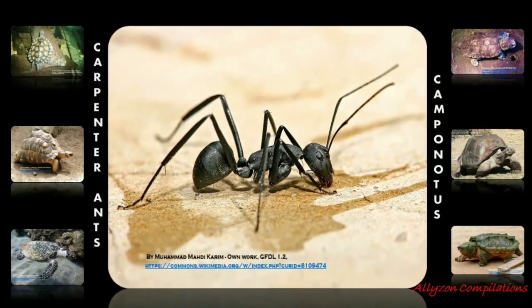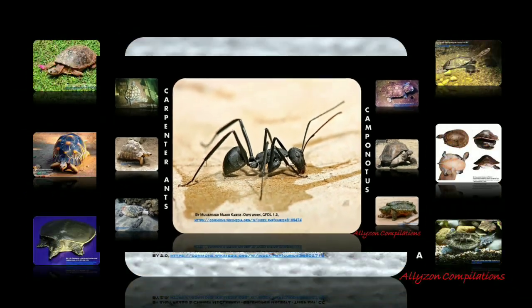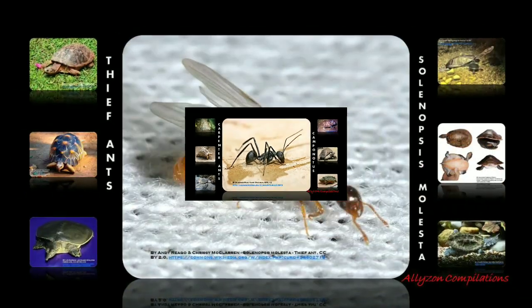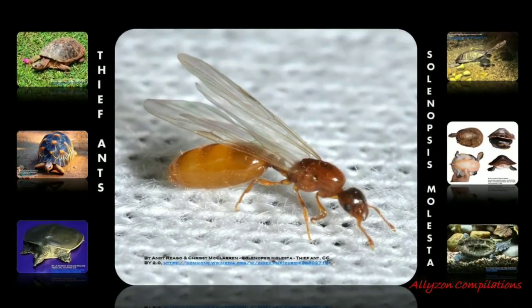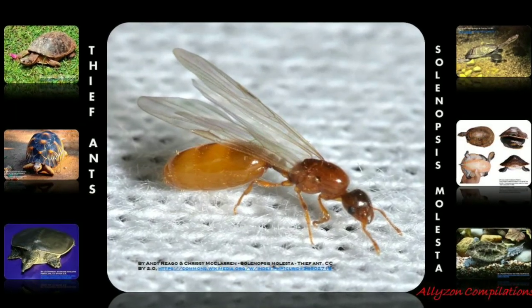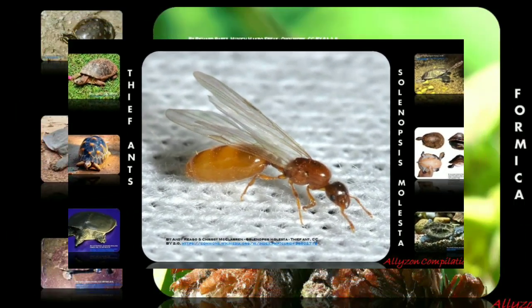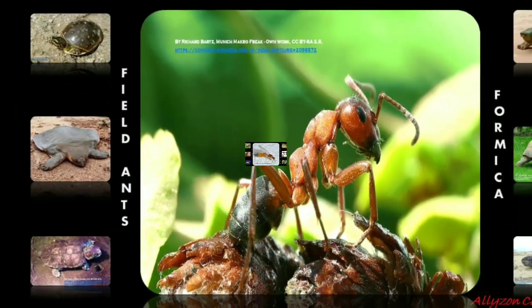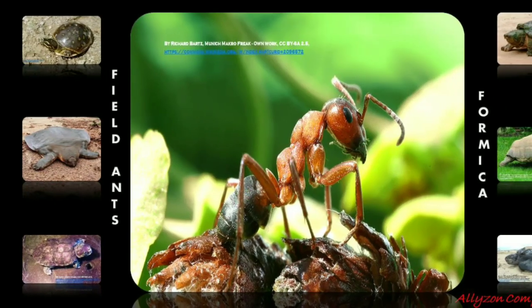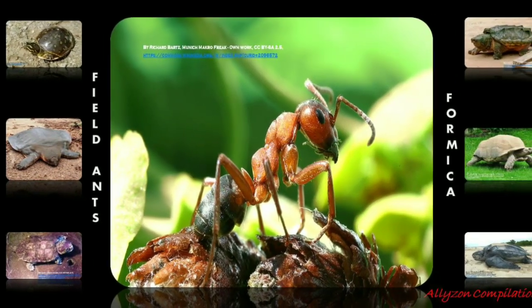While some types of ants have multiple queens, most colonies only have one that lays hundreds of eggs annually. Protected and cared for by workers, these females rarely leave the nest. As a result, the lifespan of a queen ant can last anywhere from 2 to 20 years, depending on their species.